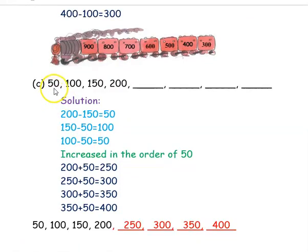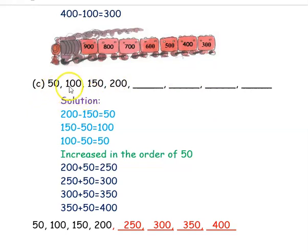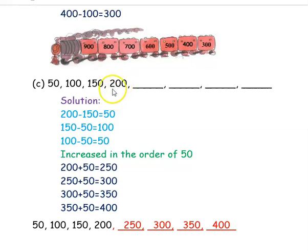The next number pattern given is 50, 100, 150, 200. If you look at the numbers, they are in increasing order. We want to find how much it is increasing. The difference between each number is 50 — each number is increased by 50. So to find the next missing number, you add 50 to the previous number 200 — so 200 plus 50 is 250. That is the first blank.